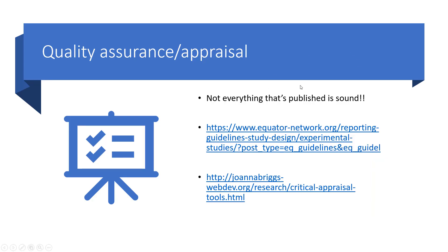We've had a whistle-stop tour of what you need to think about beyond the p-value when looking at inferential statistics. One important thing to remember is that just because something is published doesn't mean it's good quality. When reading any research using statistics, you need to approach it with a critical eye. Using reporting guidelines and checklists can help structure that assessment. Two useful websites are the EQUATOR Network and the Joanna Briggs Institute, both of which provide collections of different checklists for different study types.